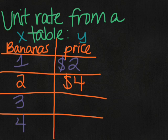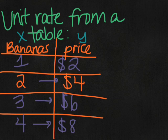If each banana costs two dollars, one banana costs two dollars, two bananas costs four dollars, three bananas would cost six dollars, and four bananas costs eight dollars. So every single time I'm multiplying by two.